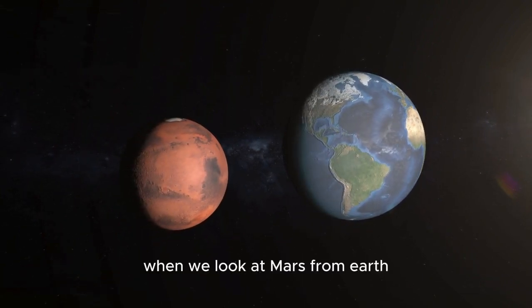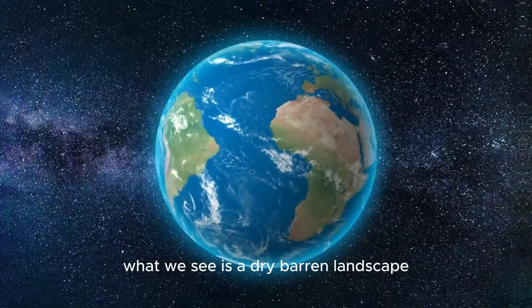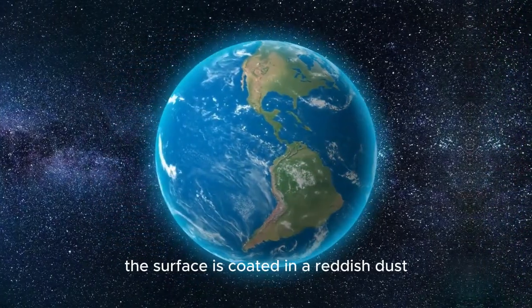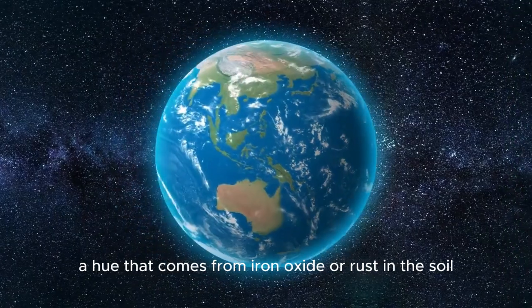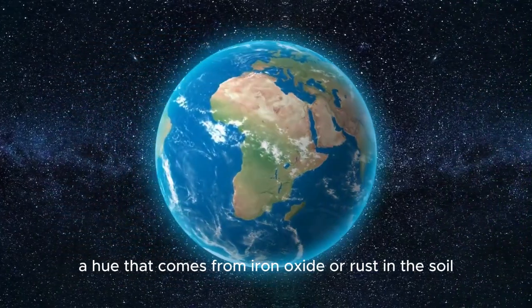When we look at Mars from Earth, what we see is a dry, barren landscape. The surface is coated in a reddish dust that gives the planet its signature color, a hue that comes from iron oxide, or rust, in the soil.